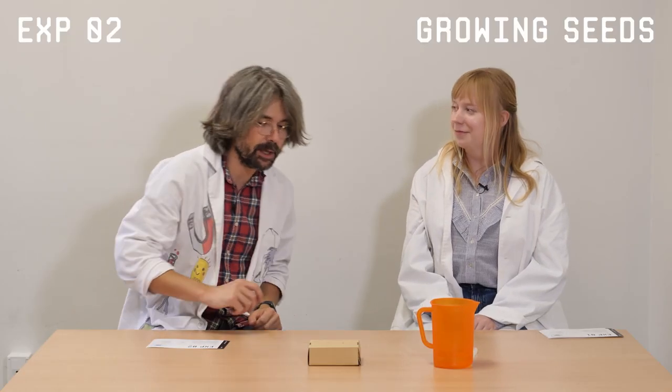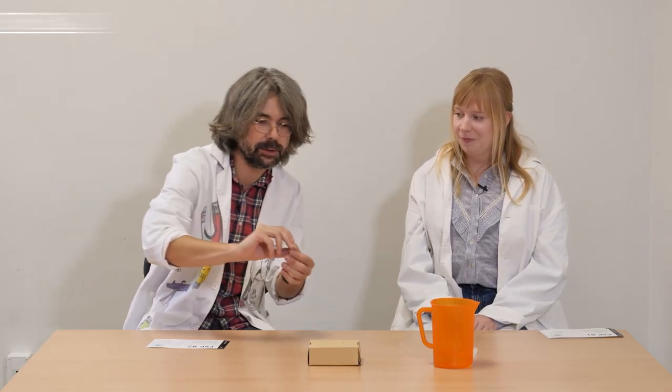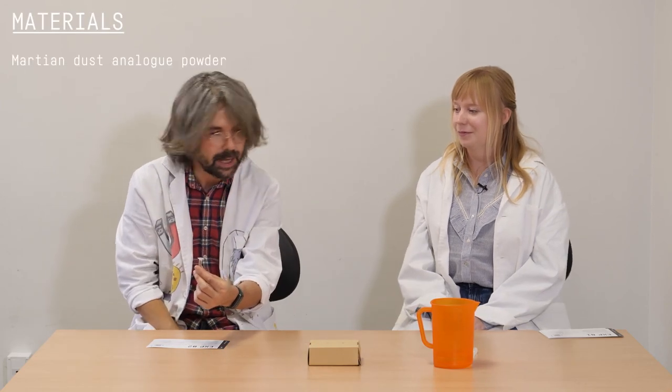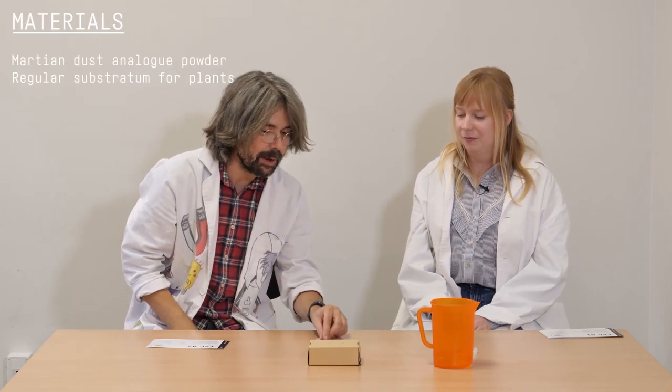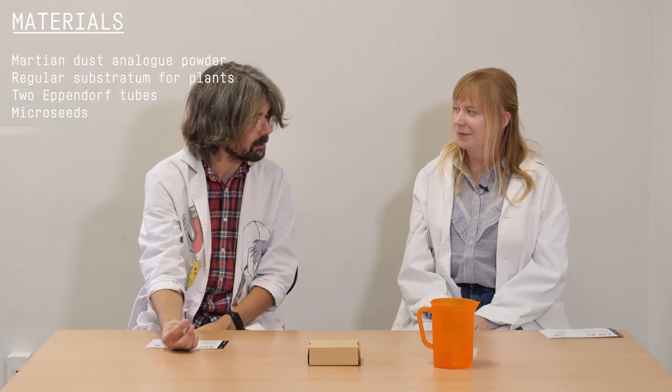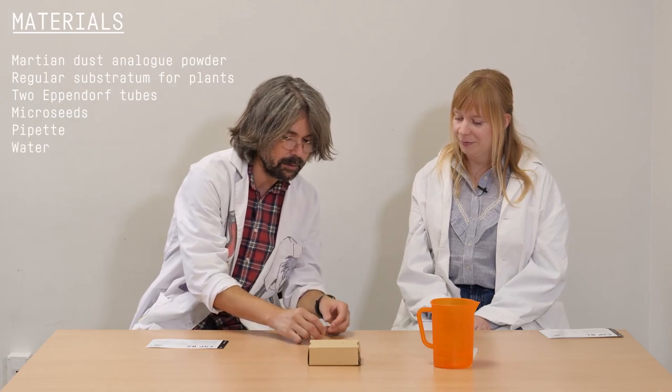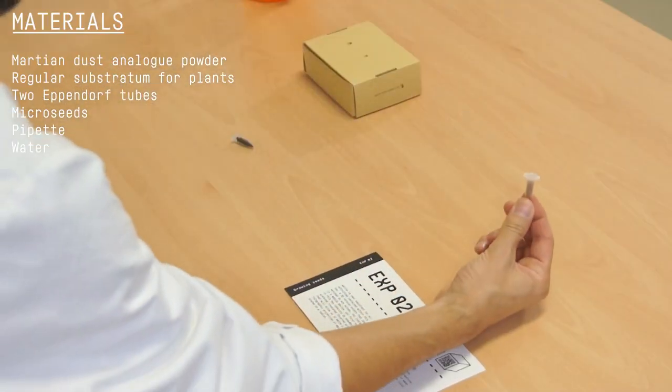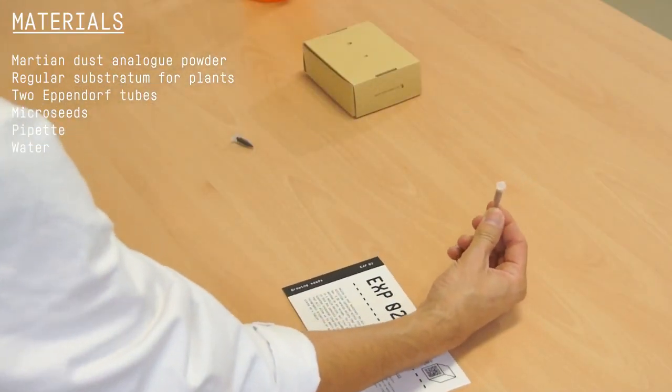For this experiment we need two small tubes. They are called Eppendorf tubes. In one of them we have some regular soil as the one in your garden, but in the other one we have some soil that is an analogue for Martian soil.